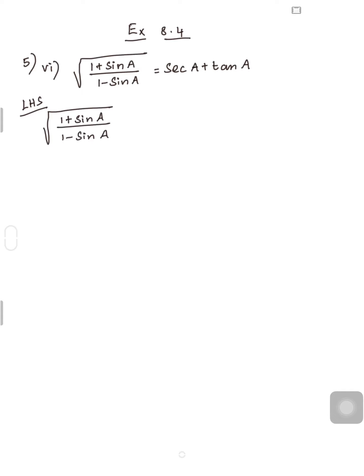Remember, whenever trigonometric ratios are given within the square root, you multiply and divide by the conjugate of the denominator. What is the denominator here? It is 1 - sinA. What is its conjugate? It is 1 + sinA. So I am going to multiply and divide by its conjugate within the square root, so (1 + sinA) / (1 - sinA) into (1 + sinA) / (1 + sinA).